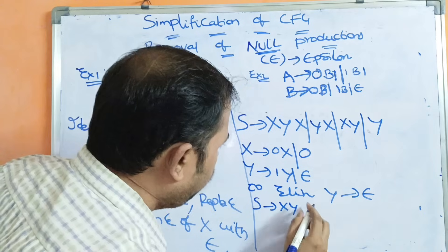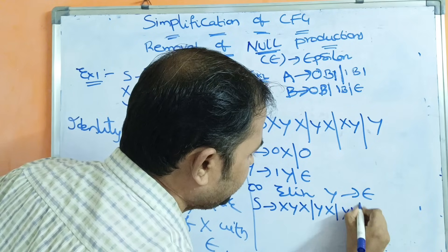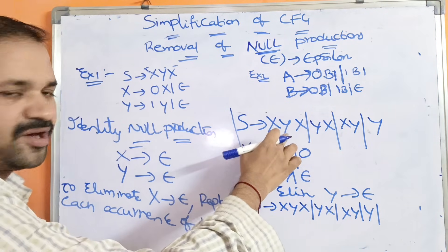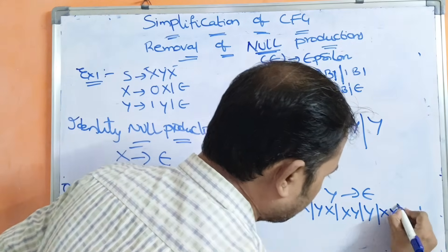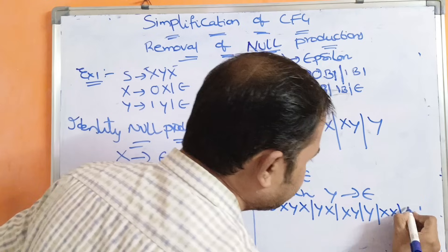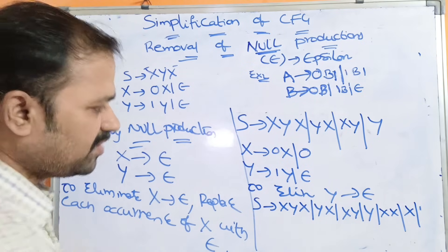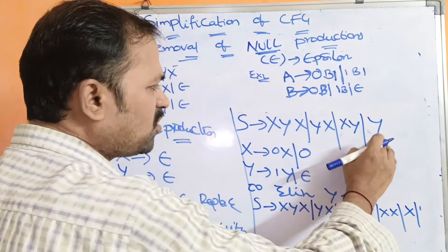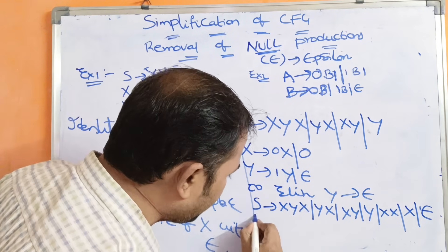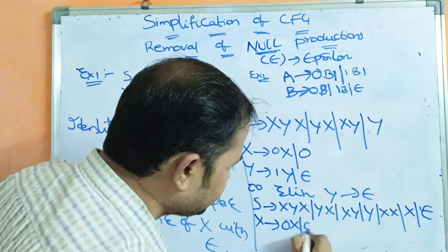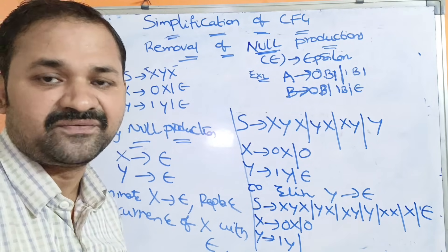First, write all productions as-is: S produces XYX or YX or XY or Y. Now substitute epsilon for Y in S: X·epsilon·X becomes XX; replacing the Y in YX with epsilon gives X; replacing Y in XY gives X, but X is already written; replacing Y alone gives epsilon. For the X productions there is no Y, so write them as-is.